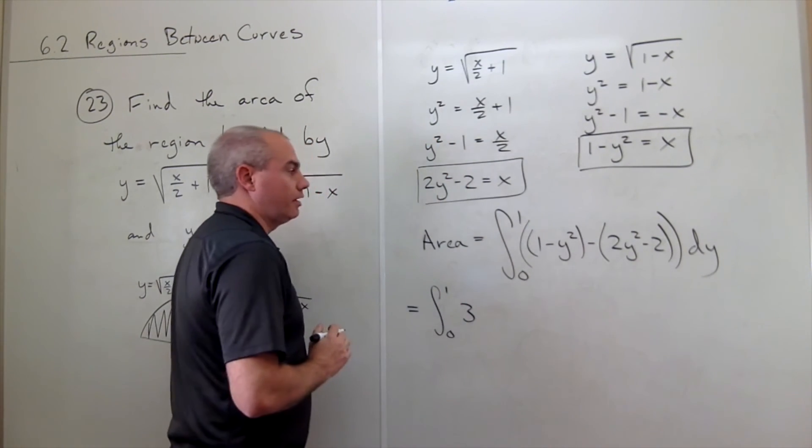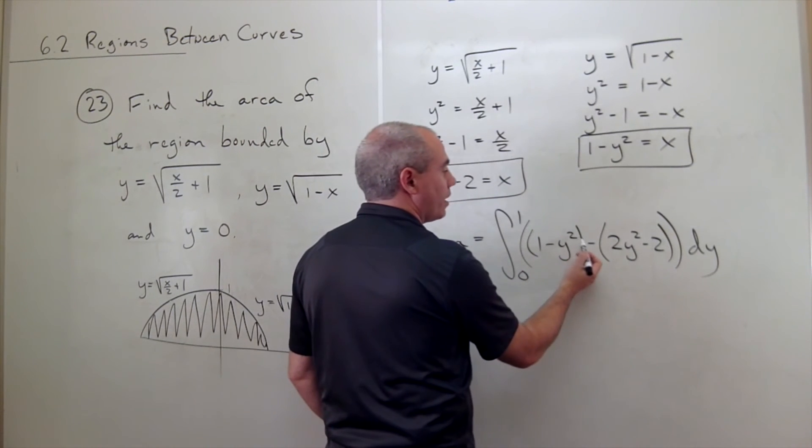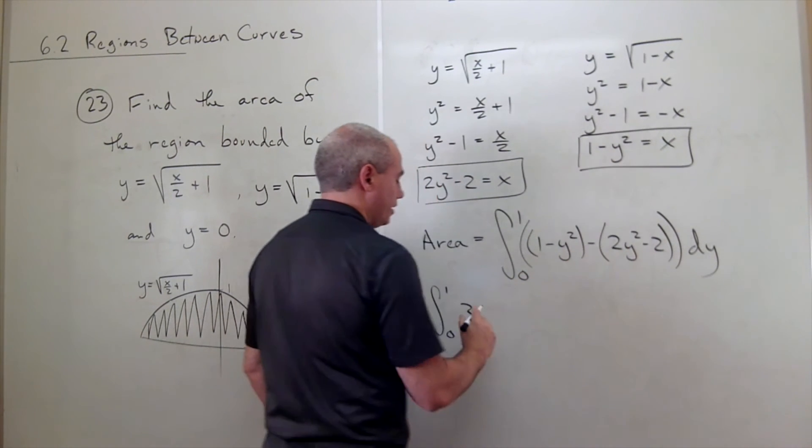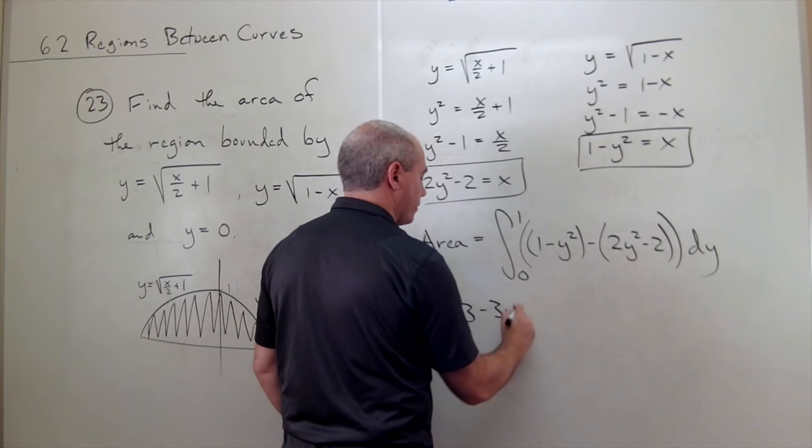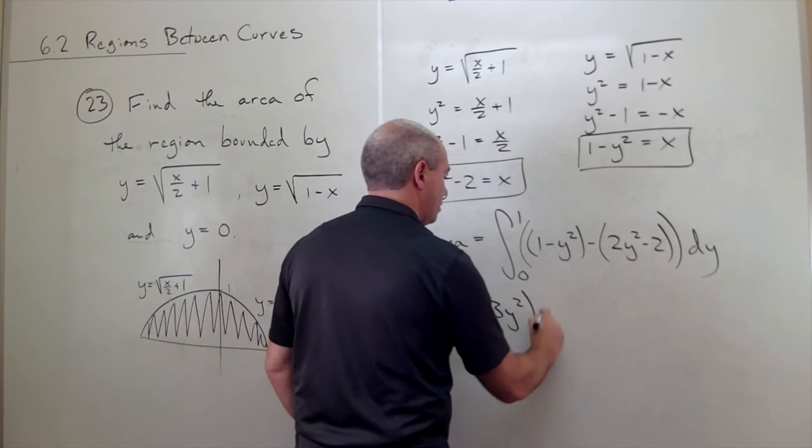and then I've got a negative y squared minus 2y squared, so that's minus 3y squared dy.